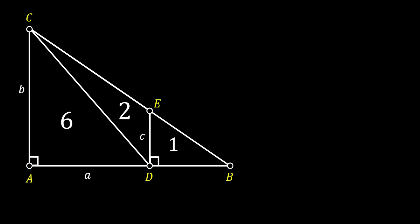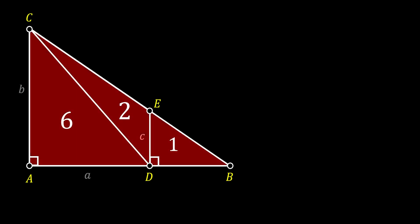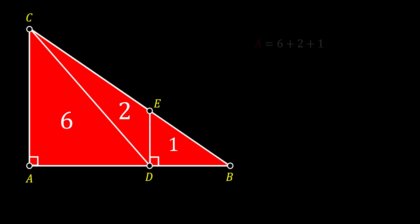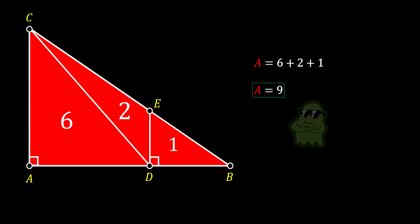Now it's pretty easy to find the area of the whole triangle, since the area is equal to the sum of the areas of all three triangles inside it. So the area of the big triangle is equal to 9 square units, and this is our solution.